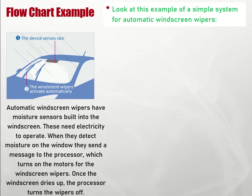When they detect moisture on the window, they send a message to the processor, which turns on the motors for the windscreen wipers. And then once the windscreen dries up, the processor turns off the wipers. So when the windscreen is wet, the wipers come on; when it's dry, the windscreen wipers turn off.